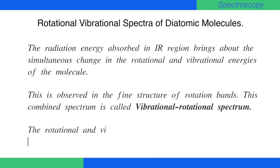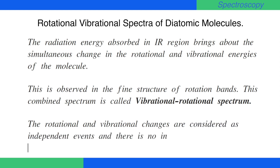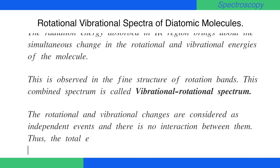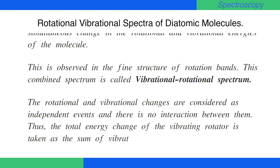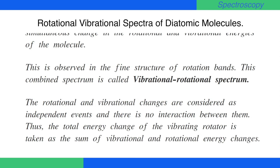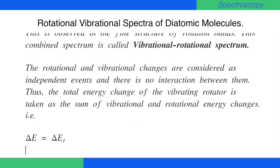The rotational and vibrational changes are considered as independent events and there is no interaction between them. Thus, the total energy change of the vibrating rotor is taken as the sum of vibrational and rotational energy changes, i.e., ΔE = ΔEj + ΔEv. This is equation number 1.